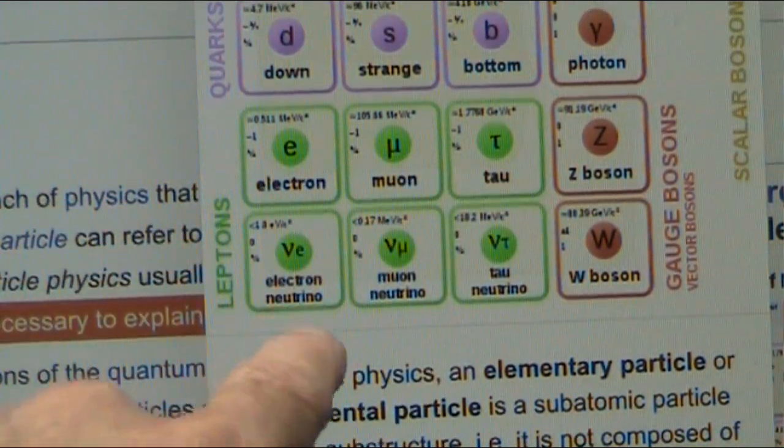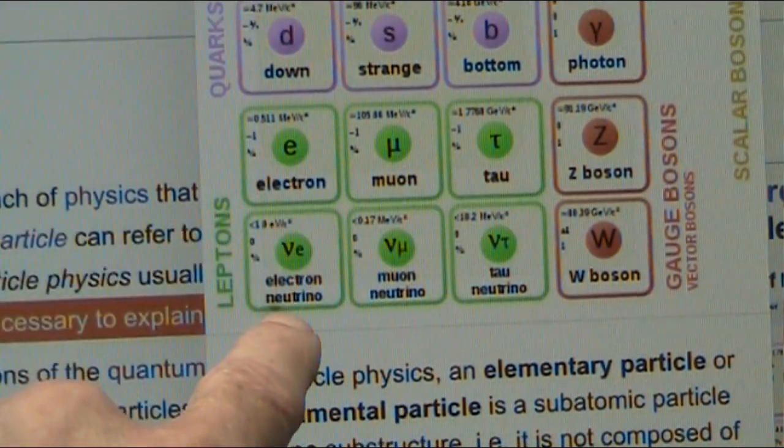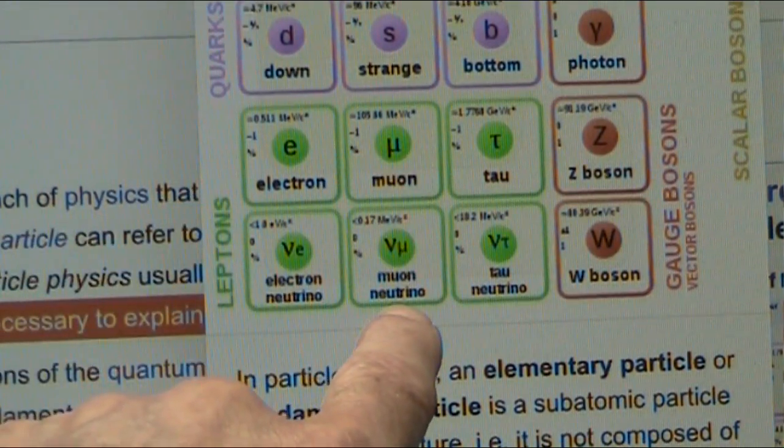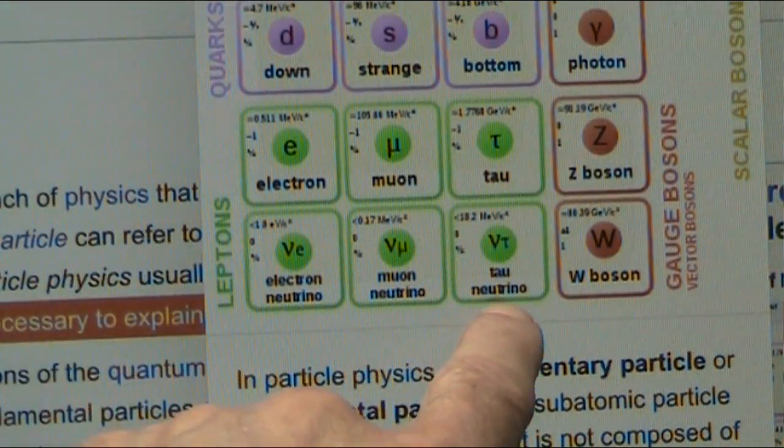Well, then we have electron neutrino, same thing, but it says neutrino. Then we have a muon neutrino, same thing it says, but neutrino. And we have a tau, same thing, but it's a neutrino.